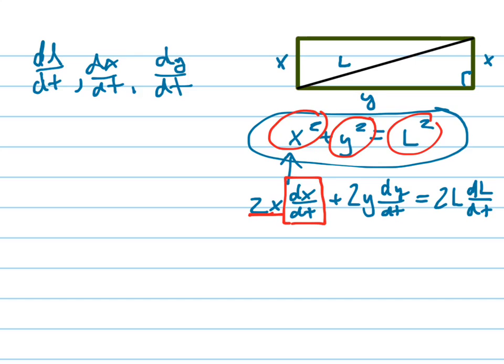Part B says, if x increases at a constant rate of 1.5 feet per second, that means DX/DT is 1.5. And y decreases, so DY/DT is negative 1.4 feet per second.